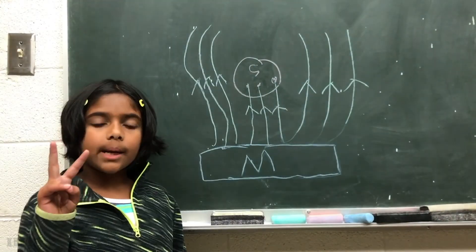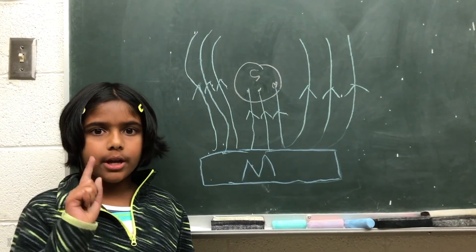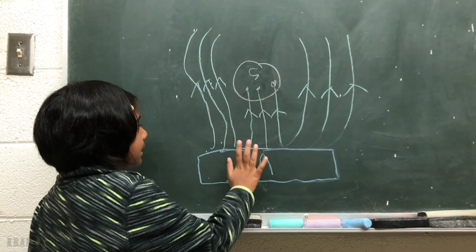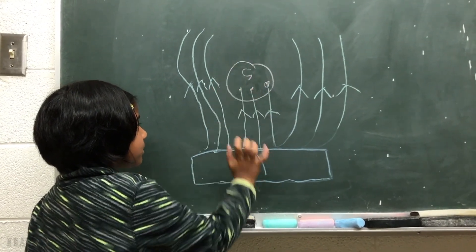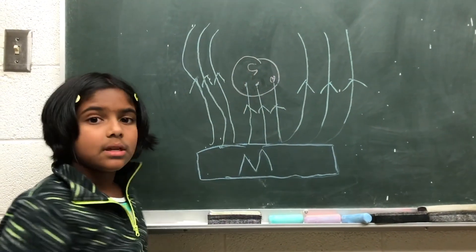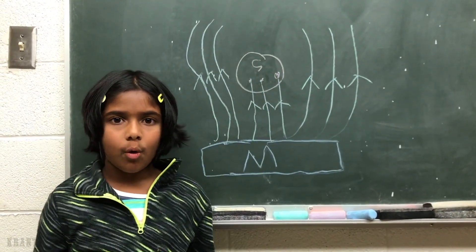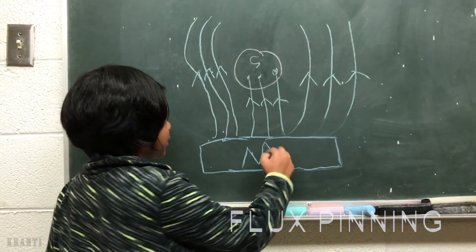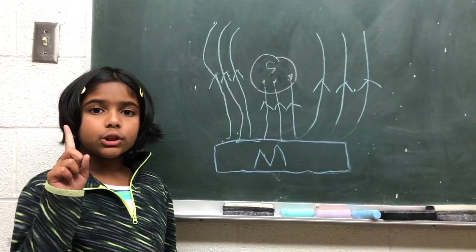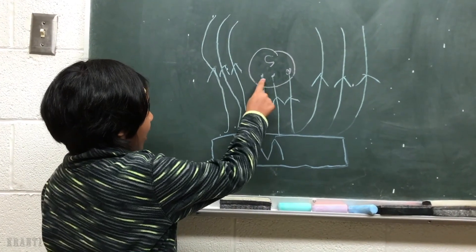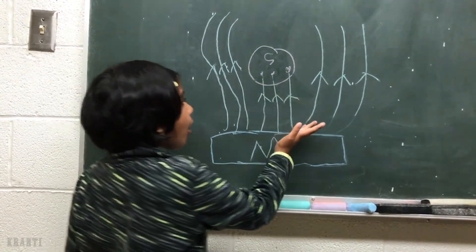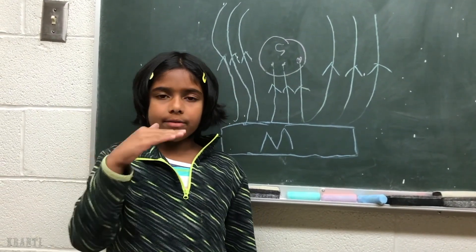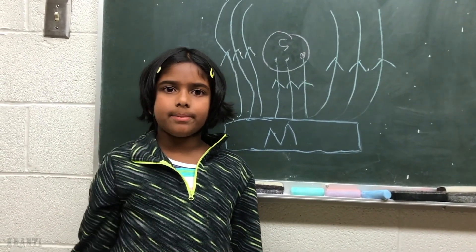There are two types of superconductors: type 1 and type 2. Type 2 has small defects that let some magnetic field lines pass through, which is known as flux pinning or quantum locking, and because of this it has a stable levitation above the magnet. Type 1 superconductor does not have any defects, so all of the magnetic field lines go around it, which makes it not have a stable levitation above the magnet.